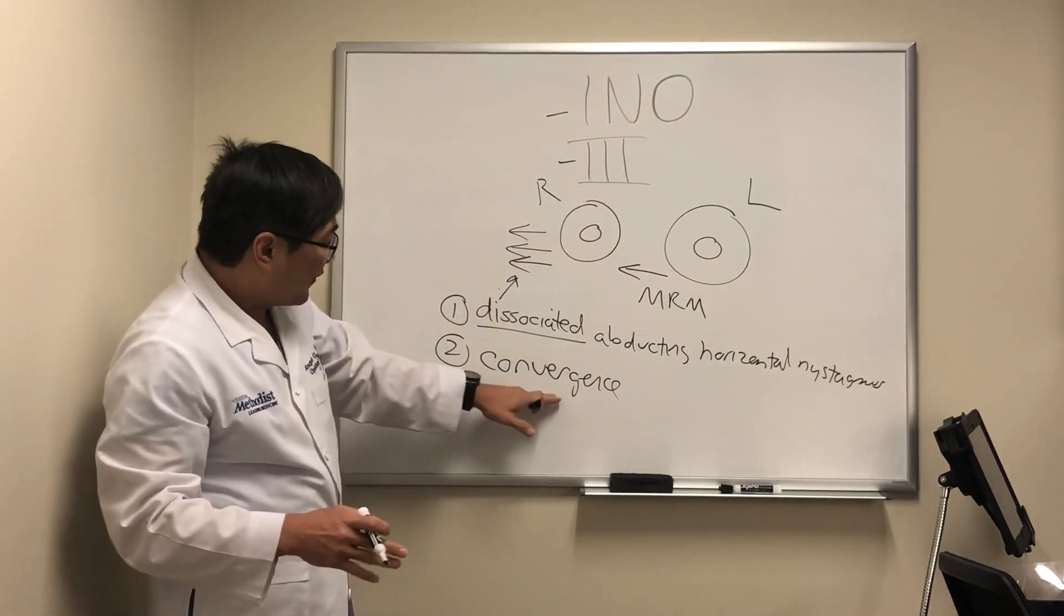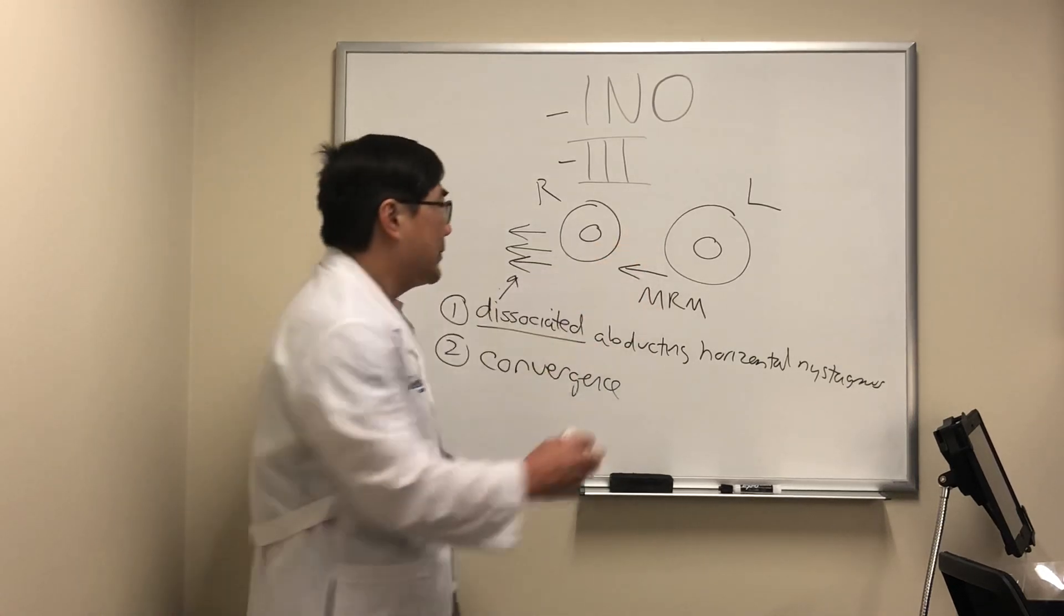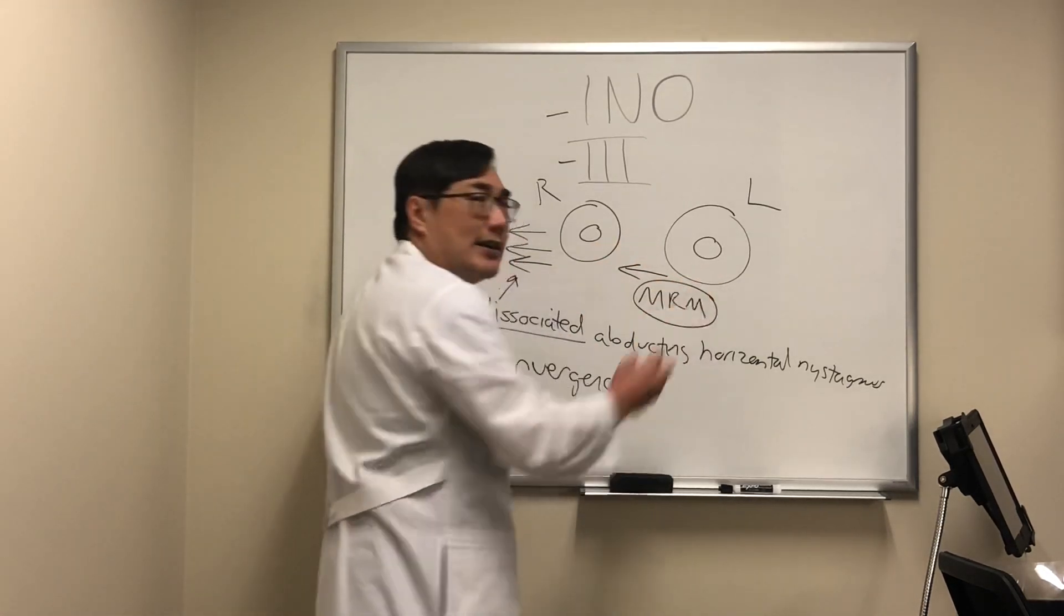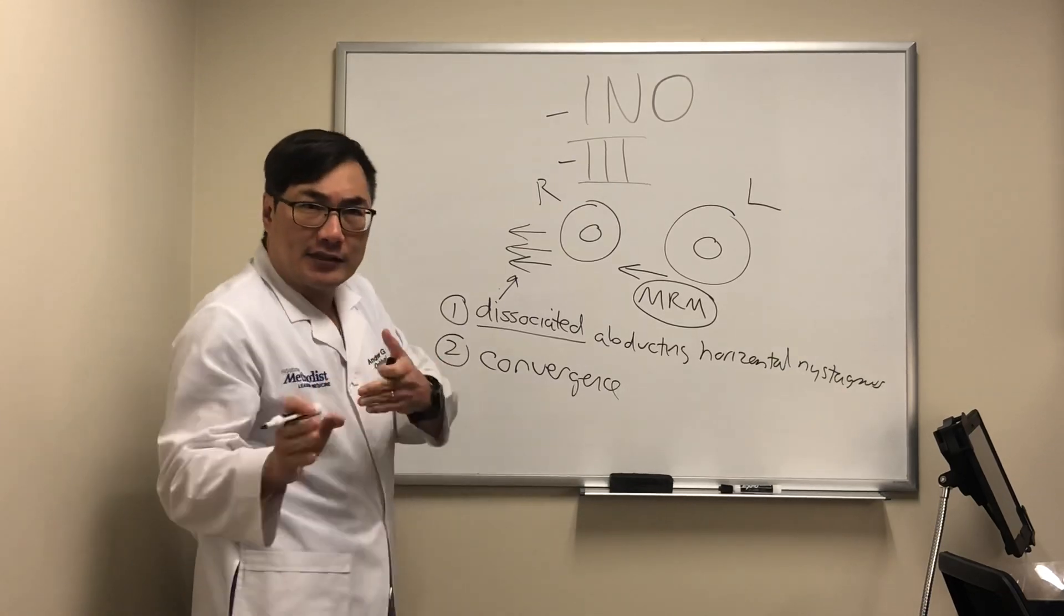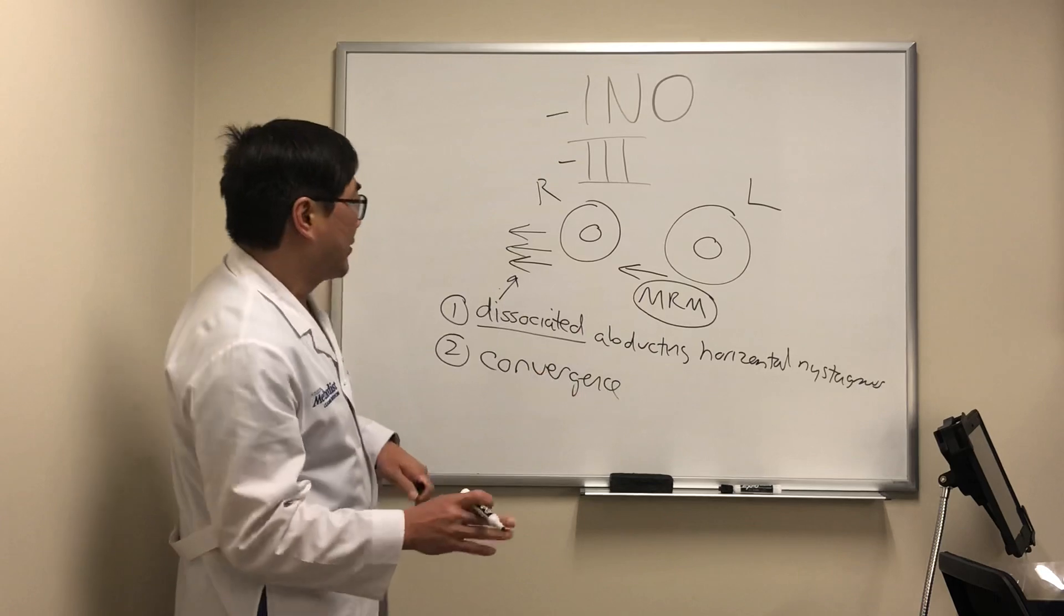And so if we can converge and activate this medial rectus muscle, then we know that this is an INO. Because if it was a third nerve palsy, both convergence and the ductions and the versions would be out if it was a third nerve palsy related medial rectus muscle palsy.